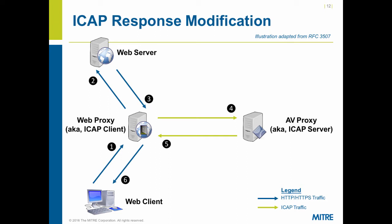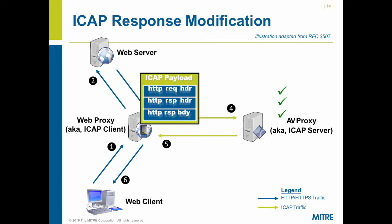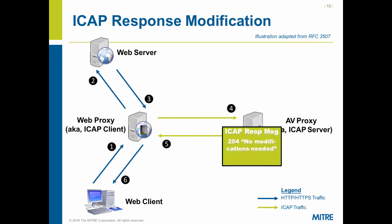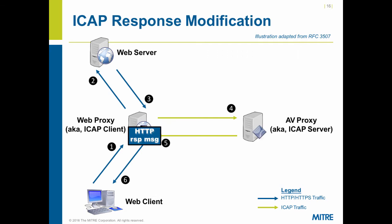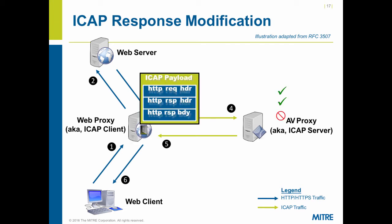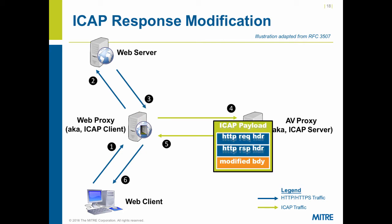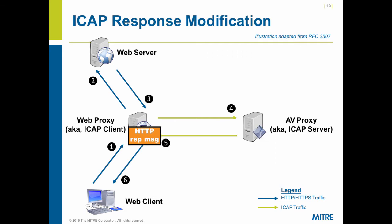In response modification mode, the proxy lets the request go out, then when it gets the response from the internet it pauses and creates the ICAP payload containing the original client request header, the server response header, and the response body — packages it all into an ICAP payload and sends it to the ICAP server, which in this case you could think of as an antivirus or malware detection device. If everything checks out, it sends status 204 back; if there's a policy violation or malware detected, it sends modified content — an error message or completely modified content — back down to the client.